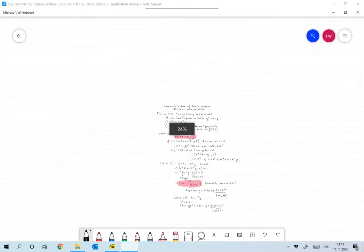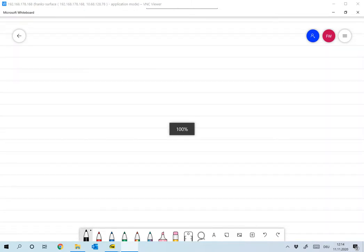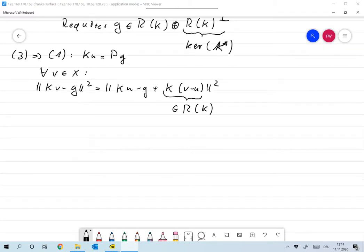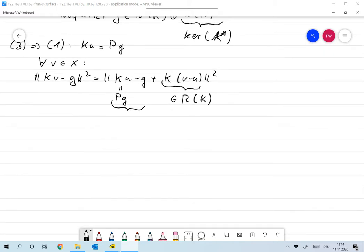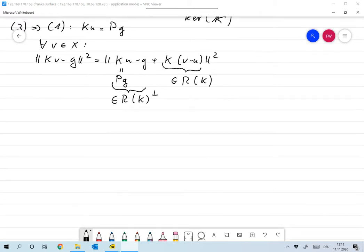Now this is an element in the range of k. ku minus g, now ku is pg, so this is the projection onto the range of k, on the closure of the range of k. So this is orthogonal to the range of k. Now these two are obviously orthogonal, so this is the same as norm of ku minus g squared plus the norm of k times v minus u by Pythagoras.